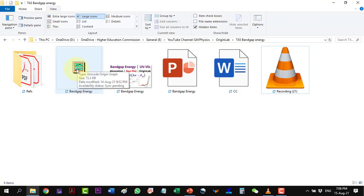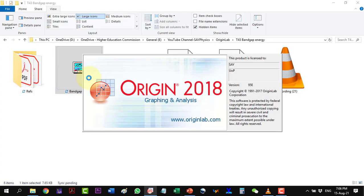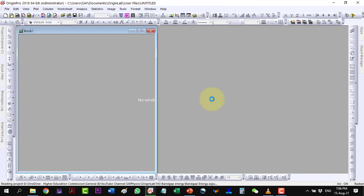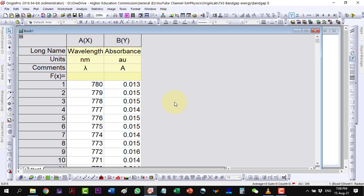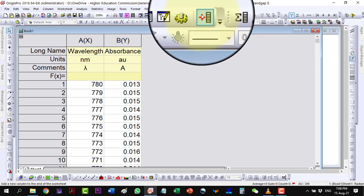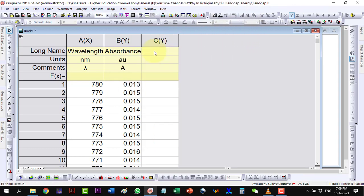Now, we will start with the UV-Vis data in Origin. The first column shows the wavelength in nanometer while the second shows the absorbance. Here we will first find the absorption coefficient alpha by adding an additional column.